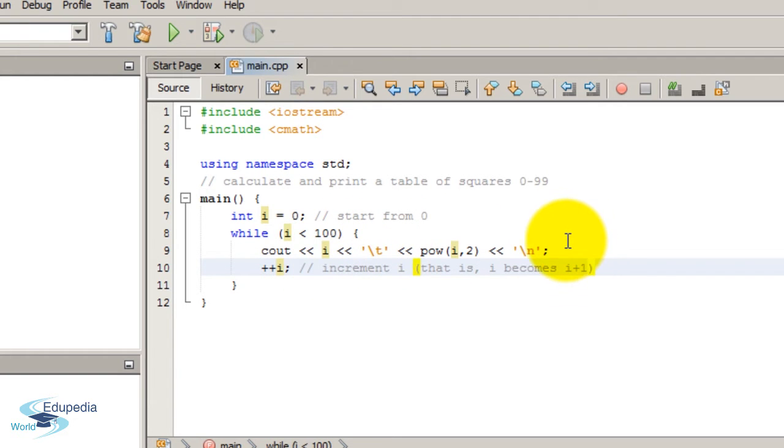And repeat the same. After repeating so many times, there would be a time the value of i becomes 100 with this statement. So after becoming 100, we have to check the condition again.